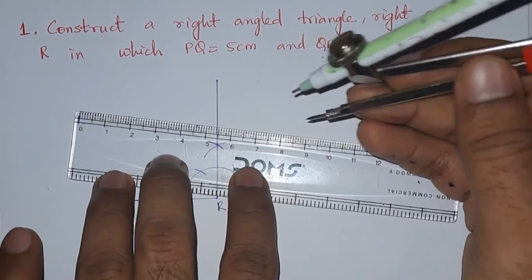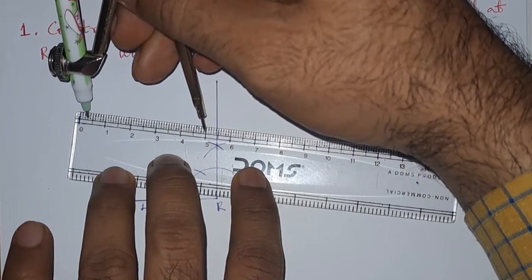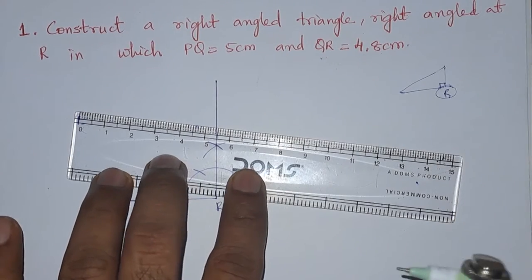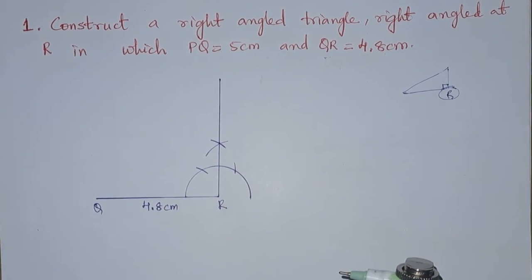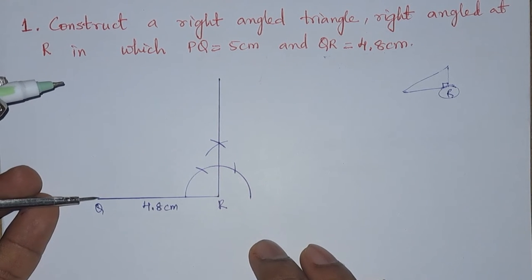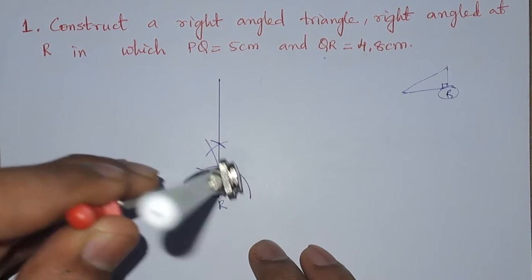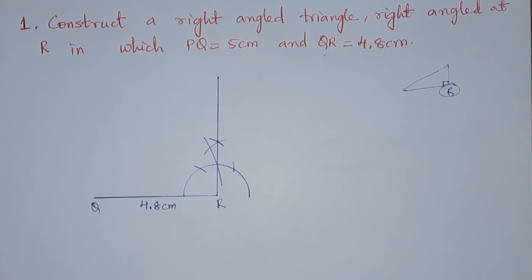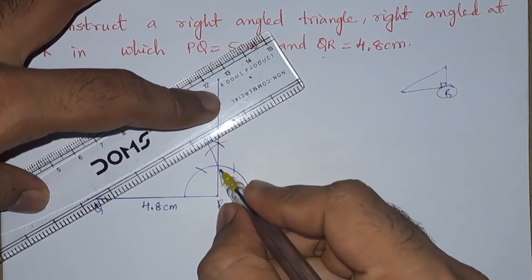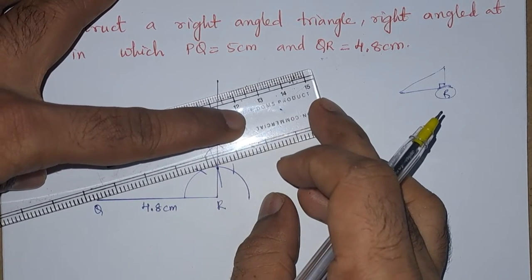We already have Q; up to P we need to take 5 centimeter. Now place the steel needle at Q and draw an arc which cuts the previous ray. We can see it is here, so we join it.